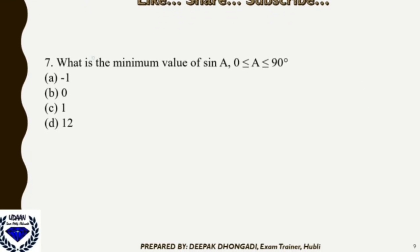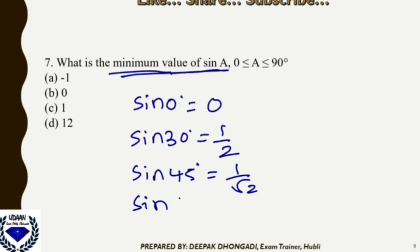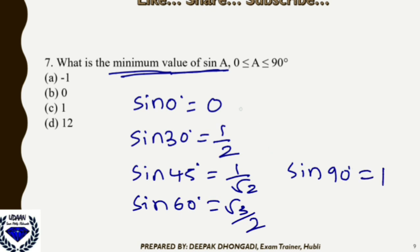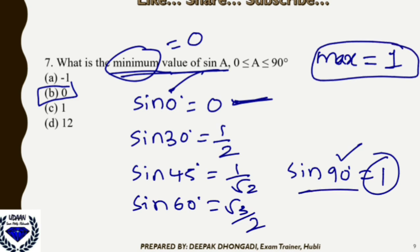Question 7: What is the minimum value of sin A when angle A lies between 0° and 90°? sin0°=0, sin30°=0.5, sin45°=1/√2, sin60°=√3/2, sin90°=1. From 0° to 90°, the minimum value is 0 and the maximum is 1. Since they ask for the minimum, the answer is 0, option B.